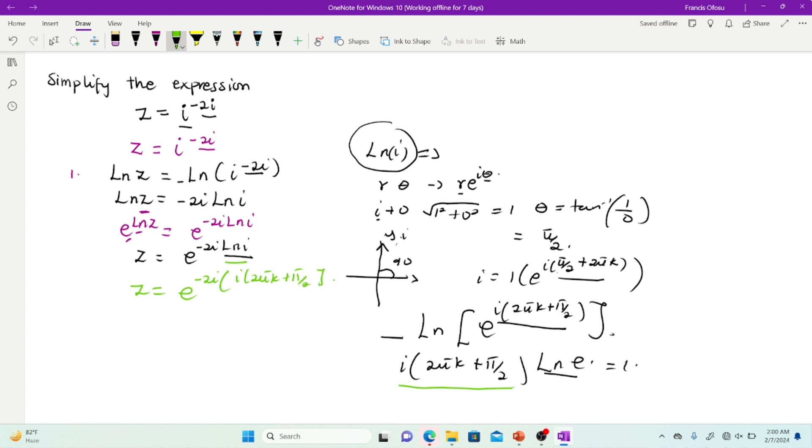So at this point, I'm going to multiply what I have up here. So at this point, I'm going to have z is equal to the expression e to the power. So this is going to multiply all that I have here.